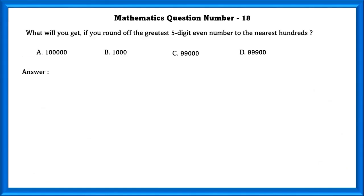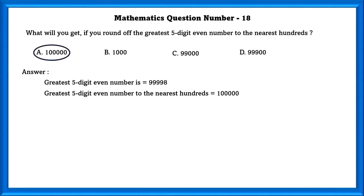Mathematics question number 18. What will you get if you round off the greatest 5-digit even number nearest 100s? The greatest 5-digit even number is 99,998. And the greatest 5-digit even number rounded off to the nearest 100s is equal to 1 lakh.